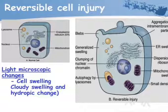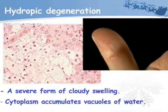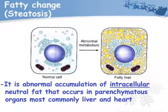Light microscopic changes include cell swelling, cloudy swelling, and hydropic change. Hydropic degeneration is an acute form of cloudy swelling in which cytoplasm accumulates vacuoles of water. Fatty change, or steatosis, is the abnormal accumulation of intracellular neutral fat that occurs in parenchymatous organs, most commonly the liver and heart.